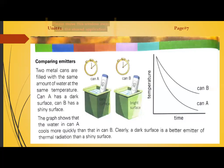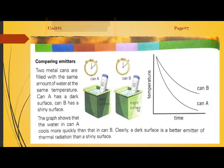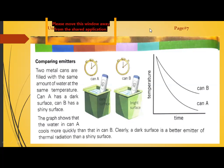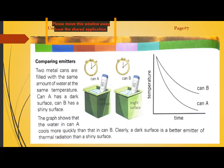Here we have two cans. Both have the same temperature and the same amount of water. Can A has a dark surface and Can B has a shiny surface. The graph shows that the water in Can A cools more quickly than in Can B. Clearly, a dark surface is a better emitter of thermal radiation than a shiny surface.